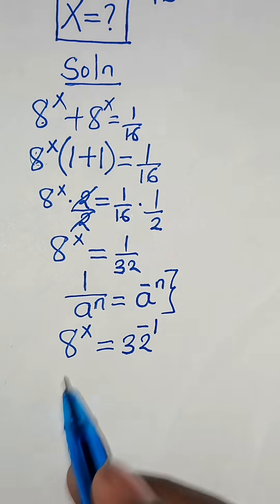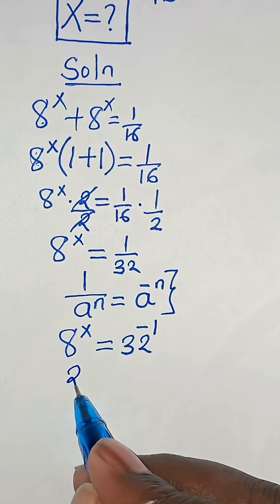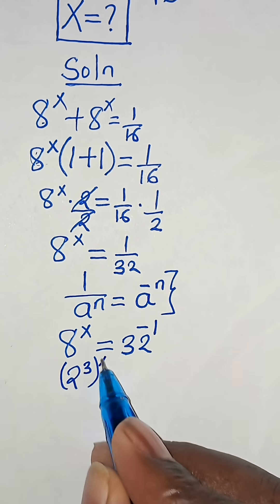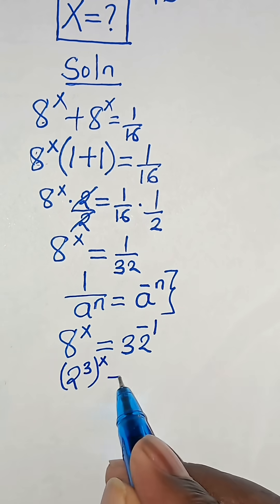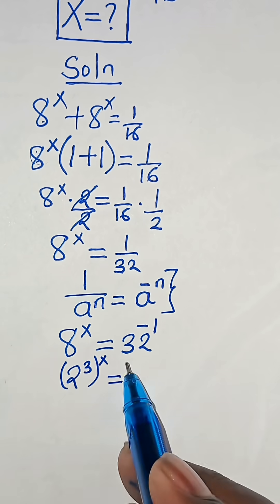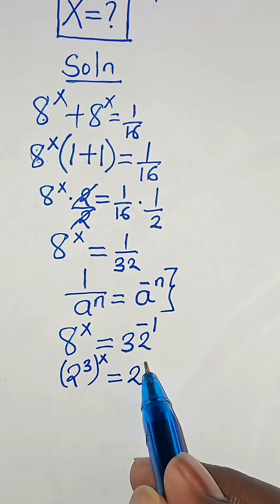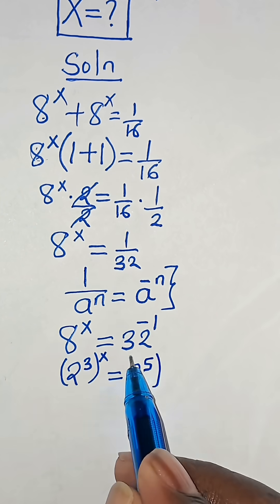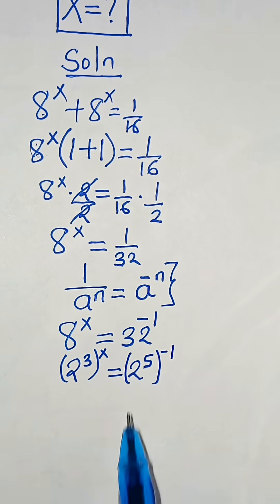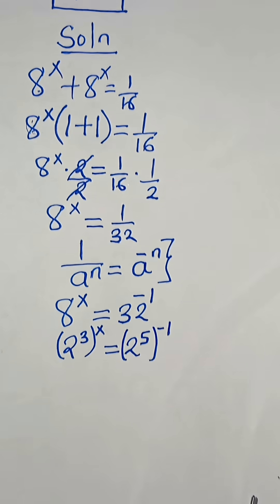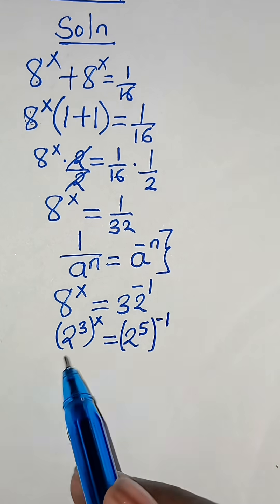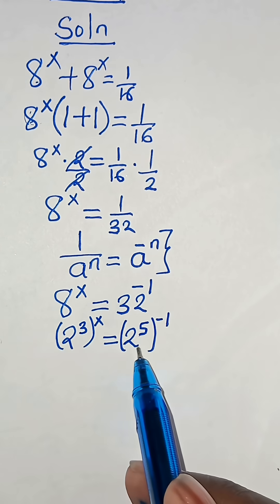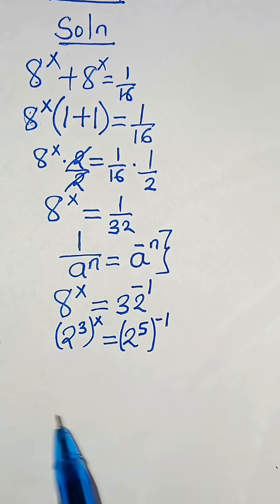So we can express 8 as 2 to the power of 3, raised to the power of x, and this equals 2 to the power of 5, raised to the power of minus 1. Now we have 2 to the power of 3 to the power of x, and 2 to the power of 5 to the power of minus 1.